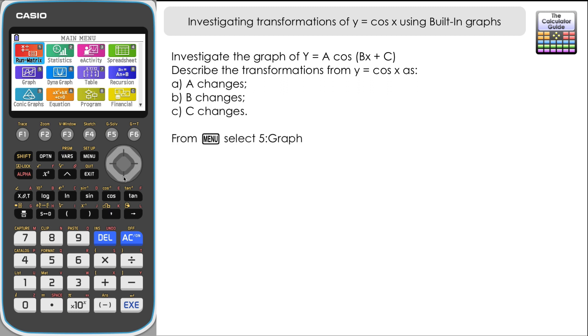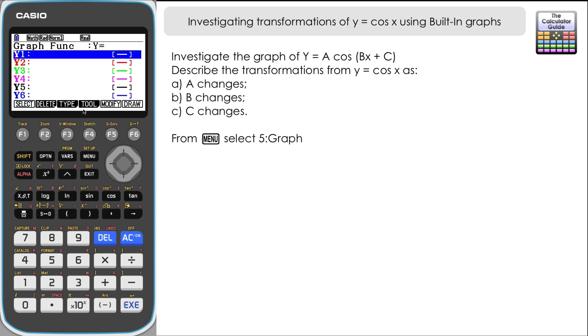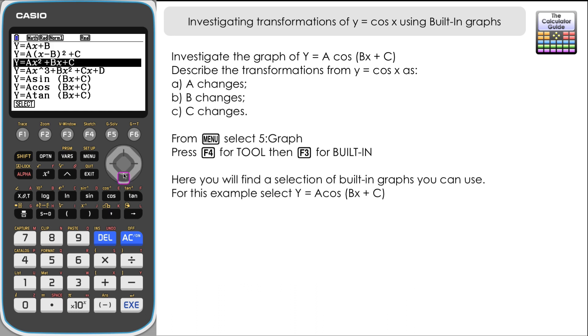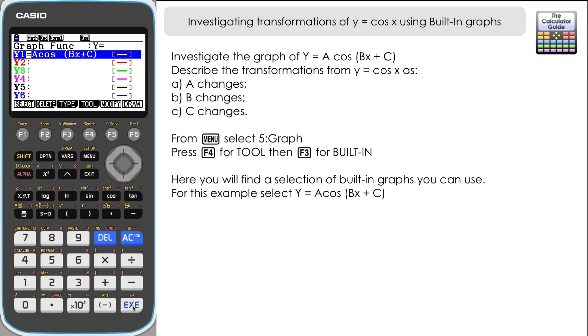From the main menu let's select 5 for graph, and then from within here we want F4 for tool and F3 for built-in. You can see that we have a list here of some of the built-in graphs that we can use with these variables. We're going to select the second from bottom one, y equals a cosine bx plus c, and press execute.